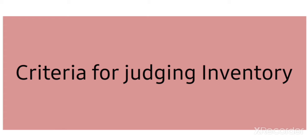In the earlier classes we discussed about inventory — what is inventory, the types of inventory, how inventory management is important, the scope of inventory management, inventory control, and the tools and techniques involved in inventory management and control. Today we will be discussing a major important topic: the criteria for judging inventory — what amount and what kind of inventory has to be maintained in a manufacturing firm.